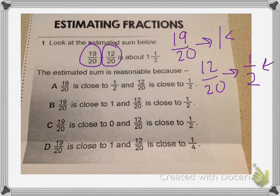Now I need to find the answer choice that explains why. If 19 twentieths is close to 1, then I can eliminate answer choice A because it says that 19 twentieths is close to 1 half. I can also eliminate C because it says that 19 twentieths is close to 0.